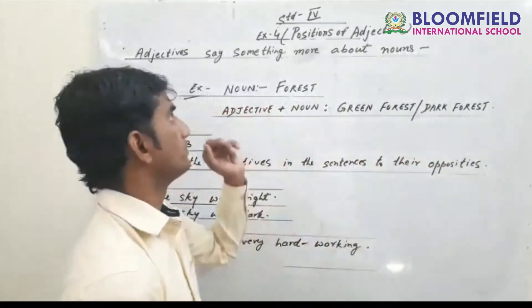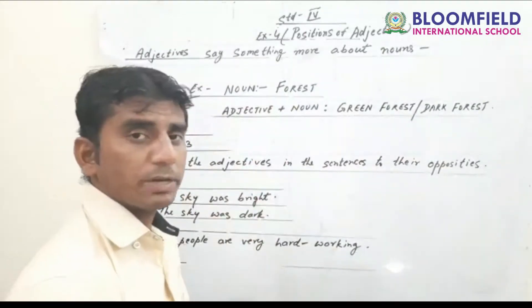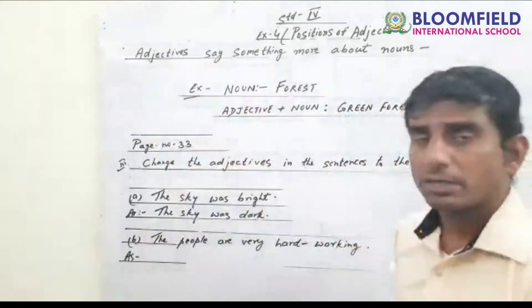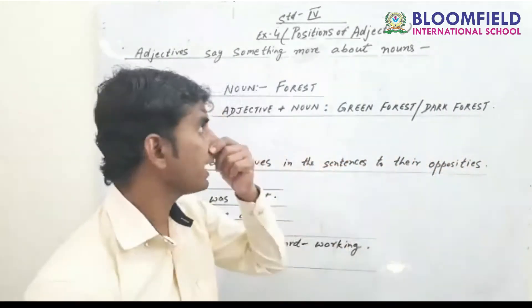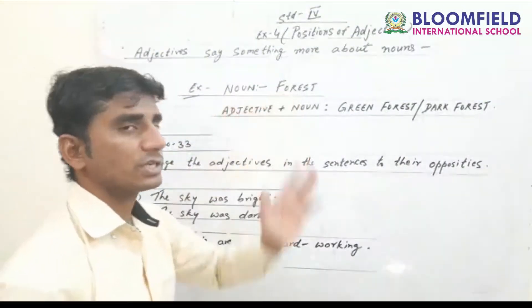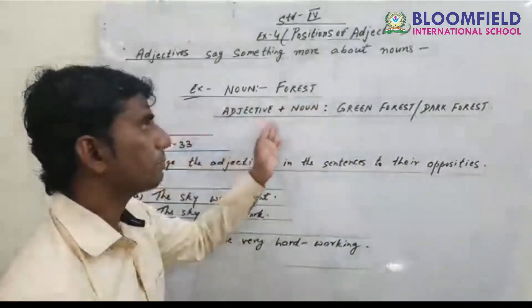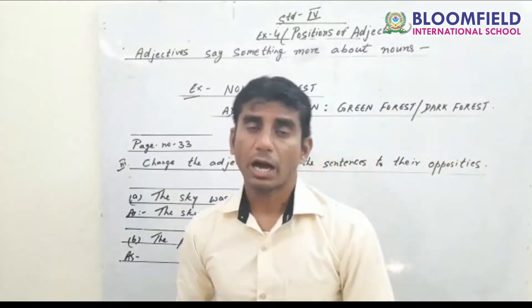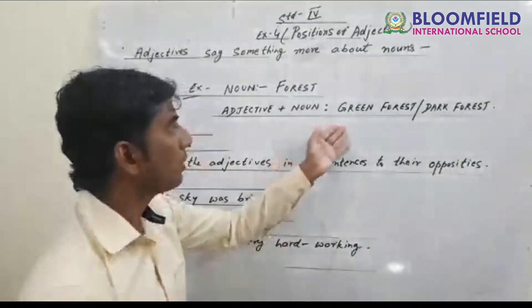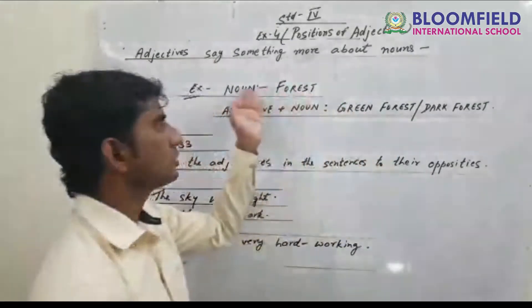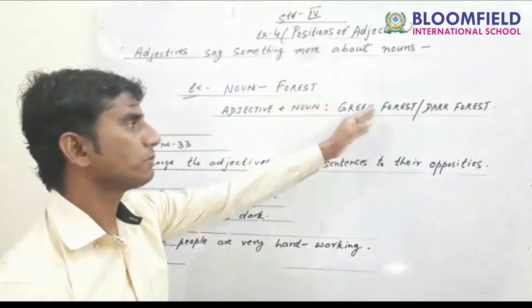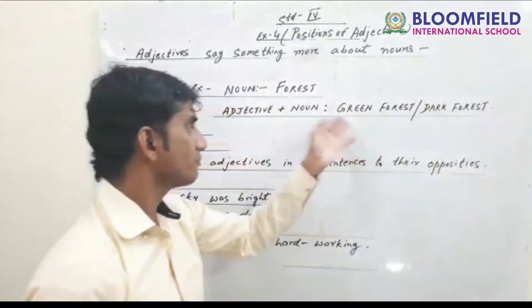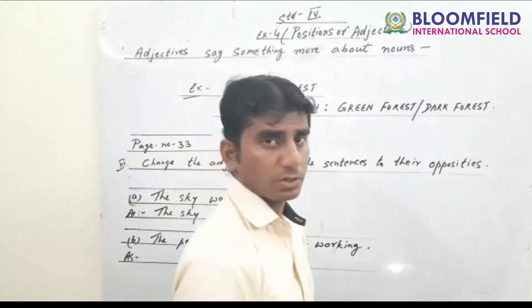An adjective is a word which qualifies a noun or a pronoun. Adjectives say something about the noun. For example, here I have taken the noun 'forest.' Some examples of adjectives are: good, bad, beautiful, ugly, old, new. So adjective plus noun — the forest is green, the forest is dark. These are a few examples. Now go to page number 33 if you have the book.